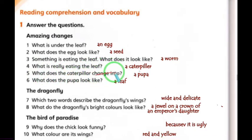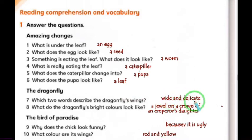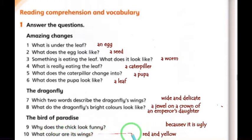What does the caterpillar change into? It changes into a pupa. What does the pupa look like? It looks like a leaf. For the dragonfly, which two words describe its wings? What do the dragonfly's bright colors look like? Why does the chick look funny? Because it is ugly. What color are its wings? Red and yellow.